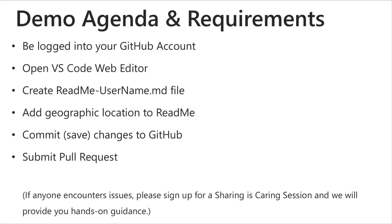Let's jump directly into our demo and talk about the agenda and requirements. Be logged into your GitHub account — this is interactive for all of you. We're going to open up VS Code in the web, create a readme file with your username, add a geographic location like 'Greetings from wherever you're at,' then commit — which is just a fancy way of saying save to GitHub — and then submit a pull request. A pull request means you copy a repo you don't own into your account, make your change, and then send a request to the administrators of that repo to pull it in. You may think you're pushing it in, but it's the reverse — you're asking them to pull it back.